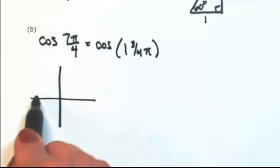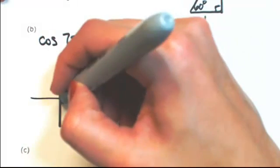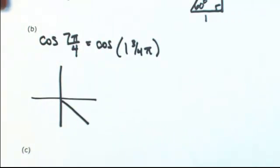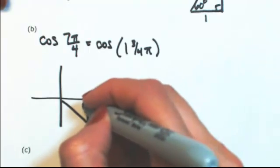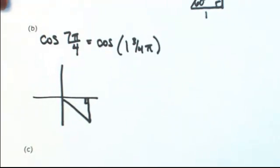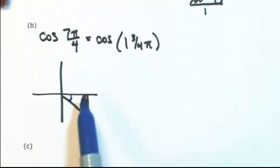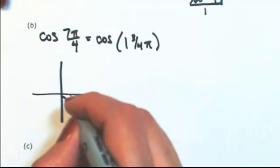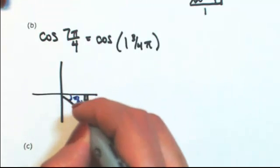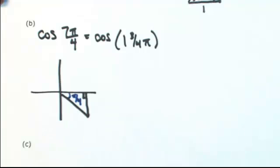So 1 pi is half a revolution, so 3 quarters more would be in the fourth quadrant. So I'm going to extend that back to the x-axis to make a right triangle so I can find the reference angle. Okay, so a full revolution is 2 pi. If this is 1 and 3 quarters, then I have a quarter pi left. Pi over 4 is the same thing as 45 degrees.